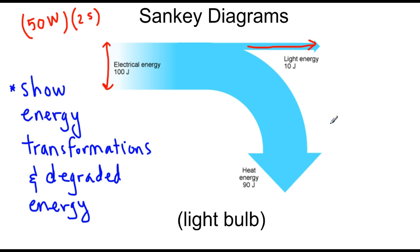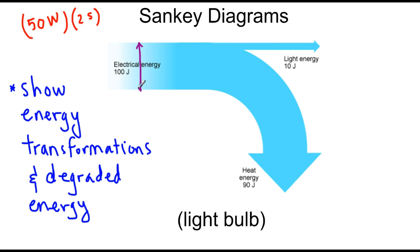That's what this arrow represents. What's this giant arrow going down? It's the amount of loss we have due to heat energy. So this is the degraded energy that cannot be used for anything useful. As you can see, the width of the arrow tells us how much energy we represent. This width is the full amount, 100 joules. Because the output is only 10 joules, this width is exactly one-tenth of this width.